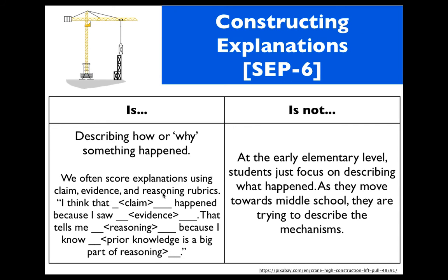Many times in science, the ultimate product we're looking for is an explanation of what happened — describing how or why something happened. In NGSS, we often score explanations using a claim-evidence-reasoning rubric. We might use a sentence frame like: 'I think that...' providing a claim; 'Because I saw...' listing our evidence; and 'That tells me...' providing our reasoning, which often includes prior knowledge. At the early elementary level, explanations primarily focus on describing what happened; moving towards middle school, students try to describe the mechanisms; and upper elementary grades bridge between those two.